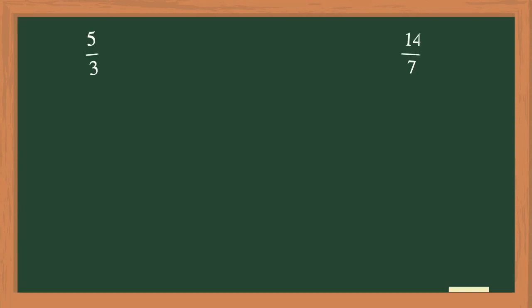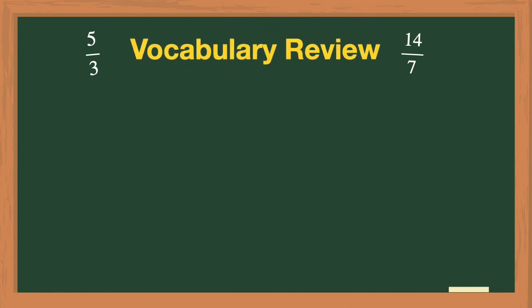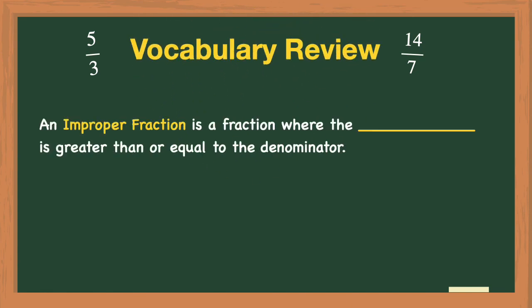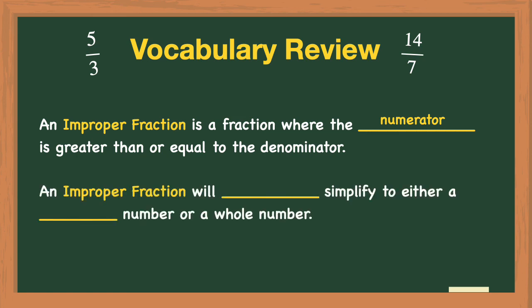Let's wrap this up with a vocabulary review. An improper fraction is a fraction where the numerator is greater than or equal to the denominator, and an improper fraction will always simplify to either a mixed number or a whole number.